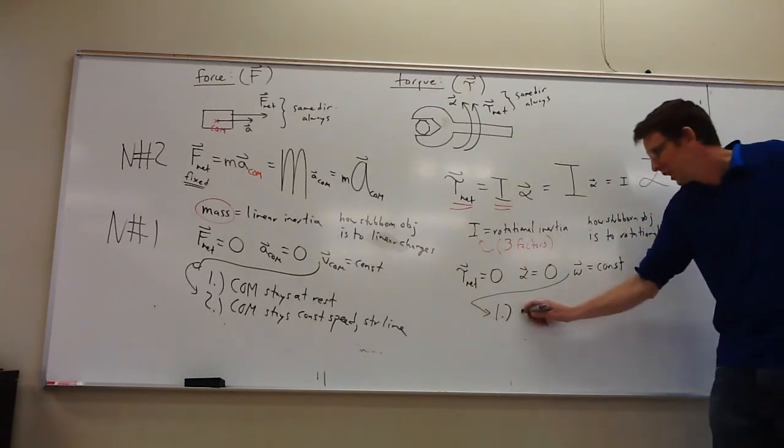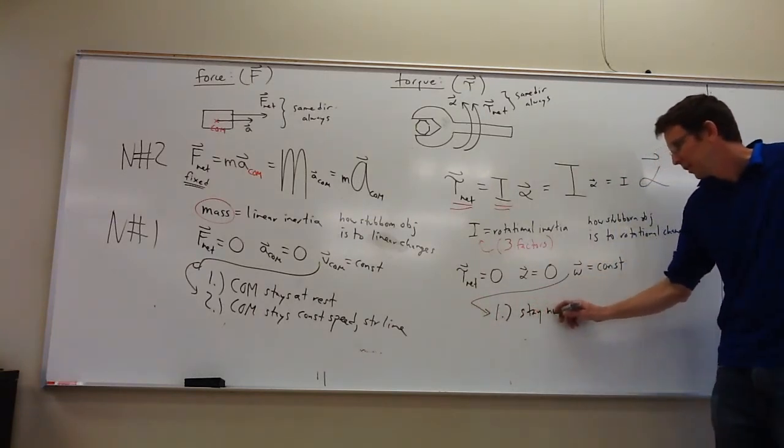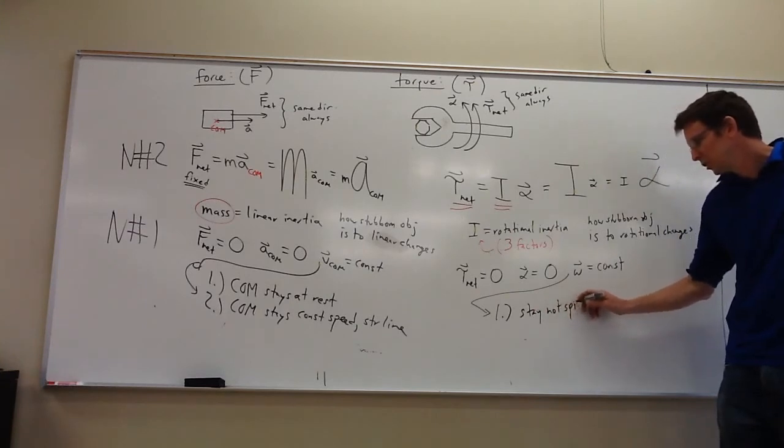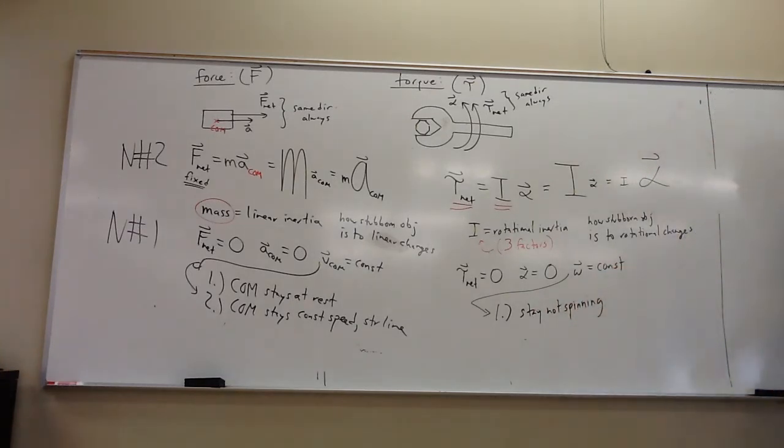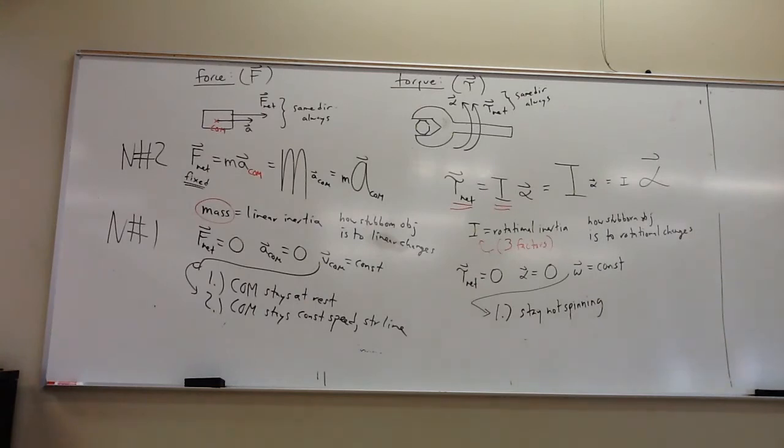Well, the angular velocity being constant could be one of two things. It could either stay not spinning at all, which by the way will be the case we usually focus on. So if something's not spinning, it stays not spinning, the angular velocity is constant at nothing.